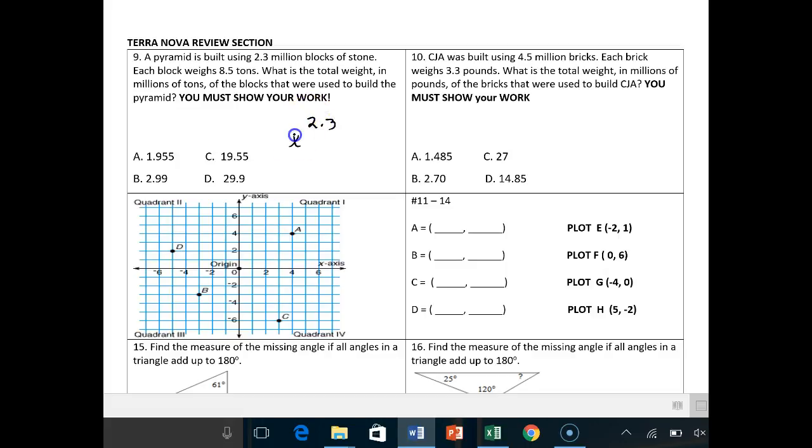A pyramid is built using 2.3 million blocks of stone. Each block weighs 8.5 tons. What is the total weight in millions of tons? So 2.3 times 8.5. I'm just going to multiply that out: 15, carry 1, lay an egg, 24, carry 2, 8 times 2 is 16 plus 2 is 18. Add it up: 5, 5, 9, 1. You have one decimal in each spot, so move two decimals in the end, once, twice. 19.55, which is answer A.